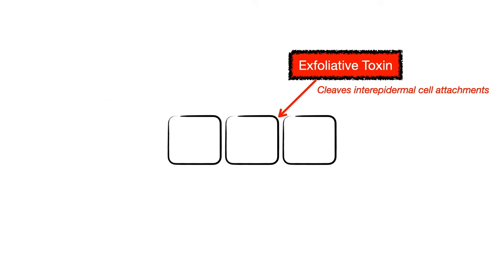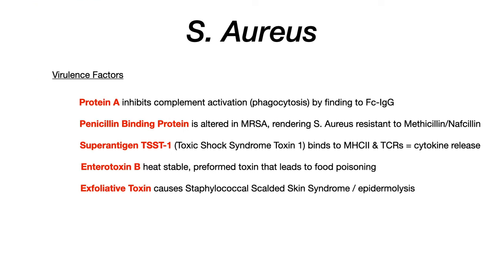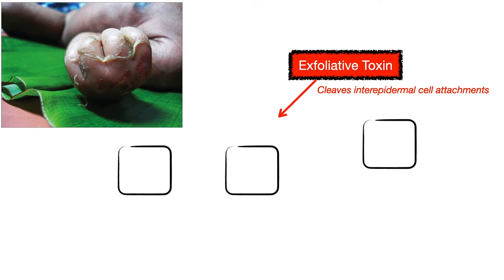So those are all five virulence factors. You need to memorize protein A — preventing complement and phagocytosis. The other names give hints: PBP gets altered so methicillin can't touch it; superantigen TSST1 causes toxic shock syndrome; enterotoxin — entero meaning GI system — causes food poisoning; and exfoliative toxin, meaning skin, causes scalded skin syndrome and epidermolysis when the protease cleaves interepidermal cell attachments.